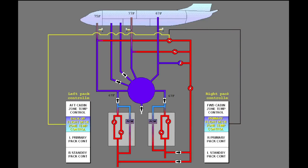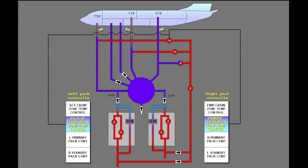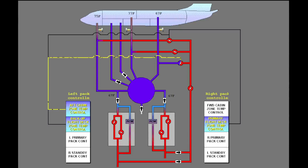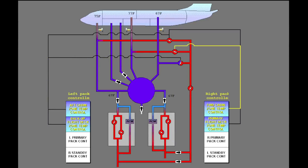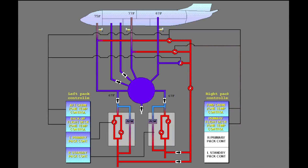The left pack controller is the secondary controller. The passenger zone trim air valves have one controller each. The left pack controller operates the aft cabin zone valve, and the right pack operates the forward cabin zone trim air valve. The left and right pack controllers also control the temperature control valves in the packs.